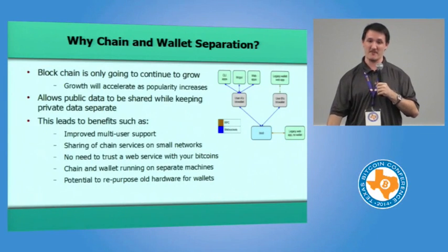Another benefit is that a lot of people run web wallets because they don't want to deal with downloading the entire blockchain on a machine powerful enough to keep up with it. This separation is somewhat like SPV — one machine handles the heavy lifting, and then you can repurpose older hardware that doesn't have anywhere near the power required for a full node to run just the wallet.